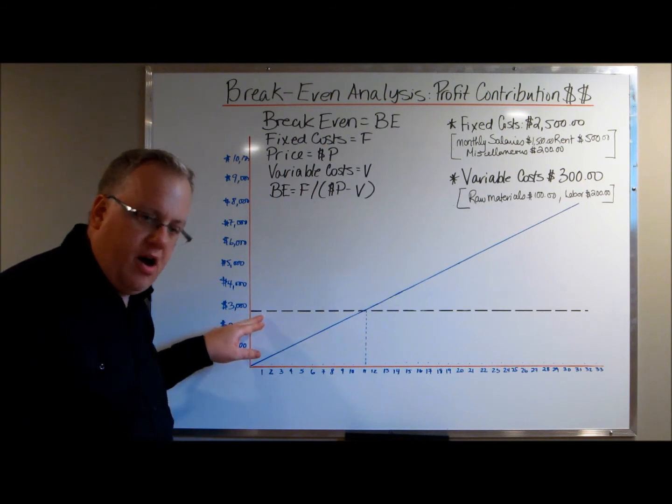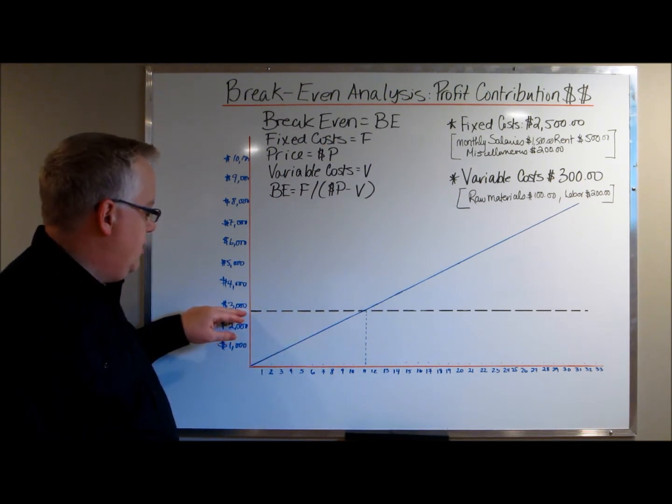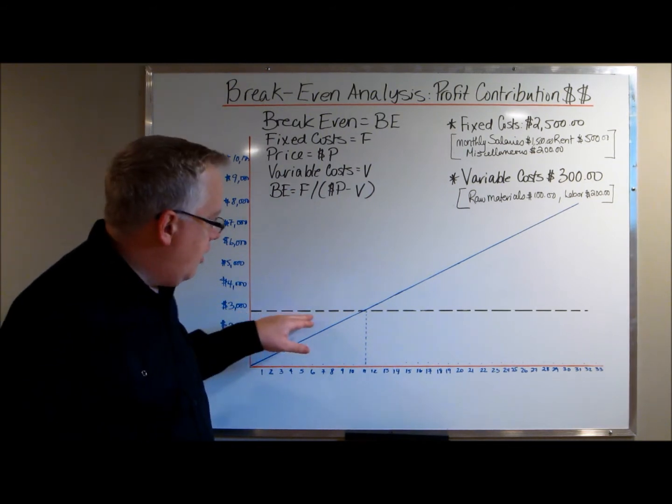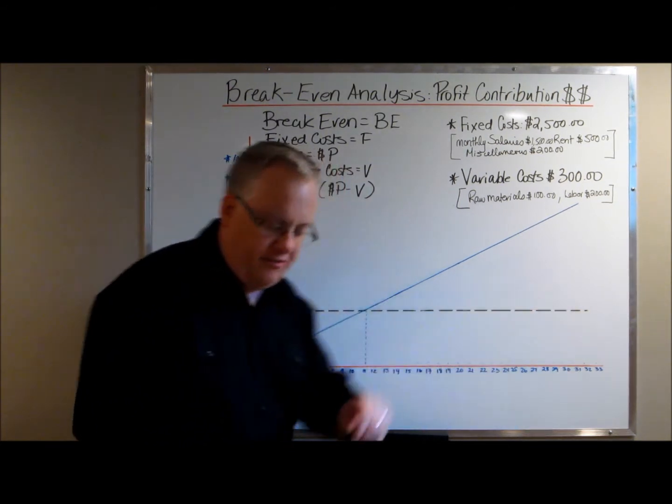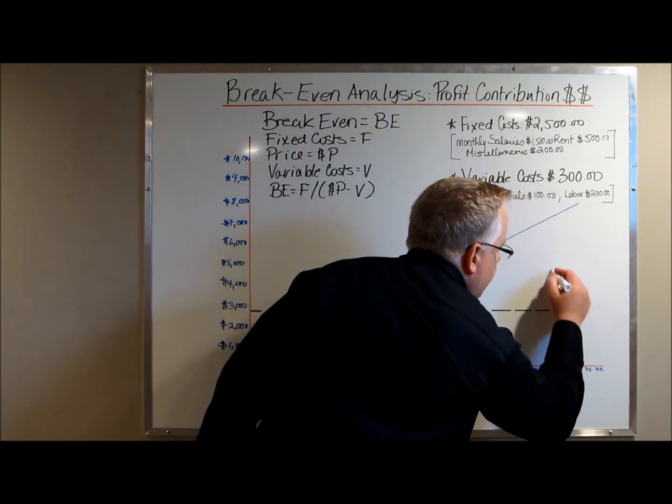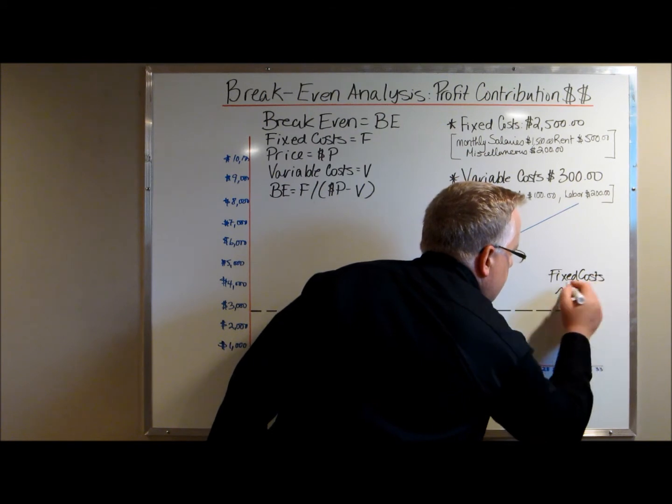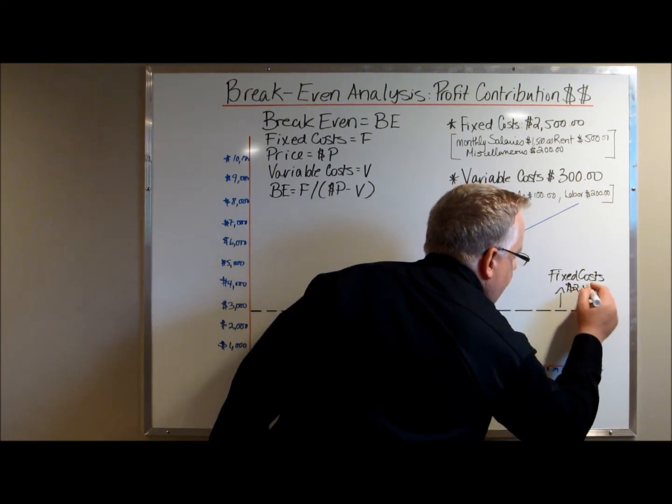And this is the fixed cost line. This dotted line right here is exactly at $2,500. This dotted line goes all the way across. That's our fixed cost line. So, I'm just going to designate it as such. Fixed costs, $2,500.